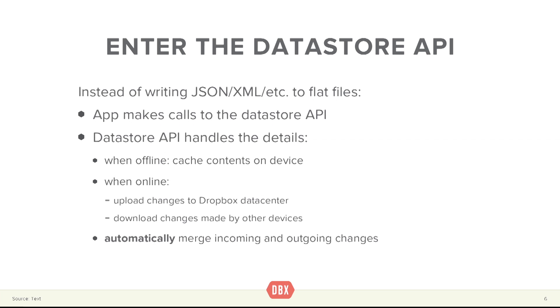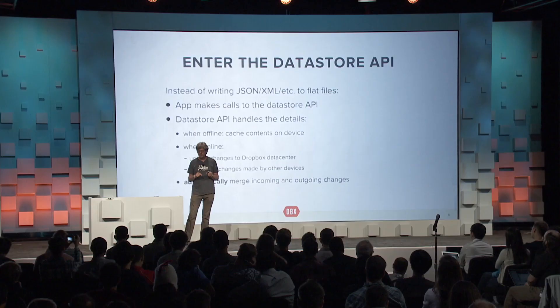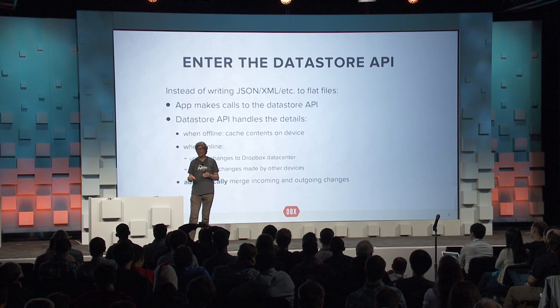The Datastore API will handle all the details for you. It will do three important things. When offline, it will cache all the data on the device so you have full access to the entire contents of your Datastore, both querying and updates. When the device goes online, it will upload the changes you made while offline to the Dropbox server. It will also download changes uploaded by different devices for the same user and app. And most importantly, it will merge those changes and automatically resolve conflicts — because you've given it enough information about your data structure to do that.